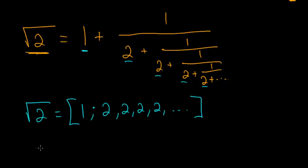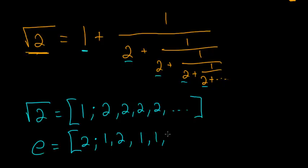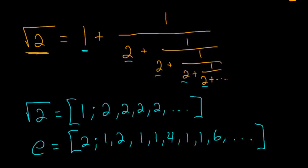For instance, a number like E can be represented as 2 semicolon 1, 2, 1, 1, 4, 1, 1, 1, 6, 1, 1, 8, and it just keeps going on forever. The nice thing about this representation is that you can actually see some kind of pattern with an irrational number, which you wouldn't get with the normal decimal expansion. And you might ask why this is worth doing — expanding a number into its continued fraction.